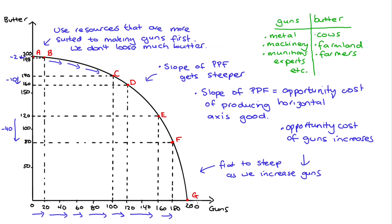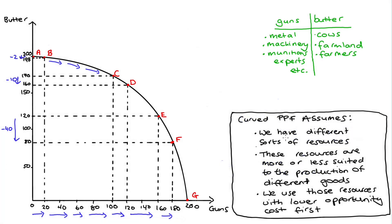The opportunity cost will continue to increase until we reach full specialisation — that's point G — where all of our resources are being used to make guns. So the curved PPF is explained if we assume that the resources we use to make our goods are different from one another and more or less suited to producing those goods — and by 'suited' I just mean having a lower opportunity cost. We use those resources with the lower opportunity cost first, before those with the higher opportunity cost. Alright, so that's it — I hope that helped. If it did, please like and subscribe. Hope you're keeping safe and happy. Thank you.